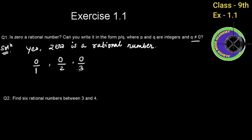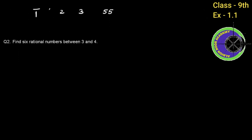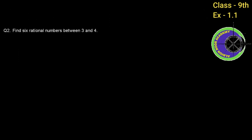In fact, here we can write it in the form of P by Q. For example, 0 by 1, 0 by 2, 0 by 3, and so on, satisfying the rational number condition.